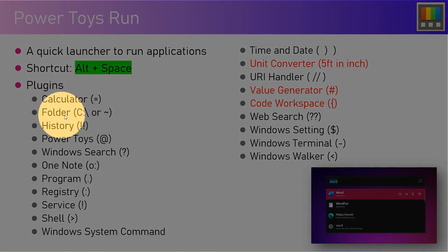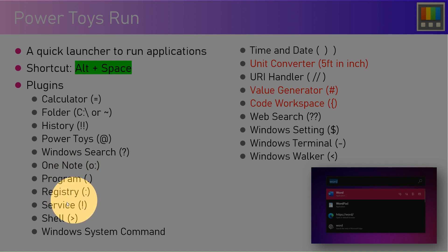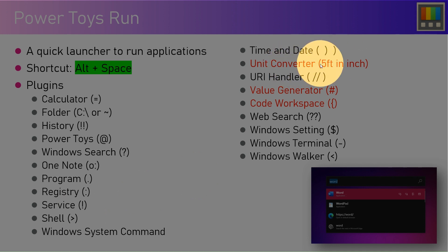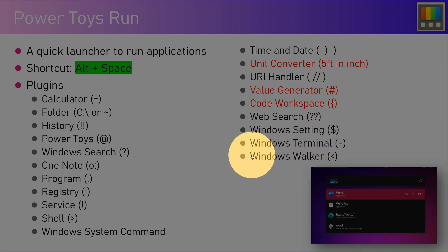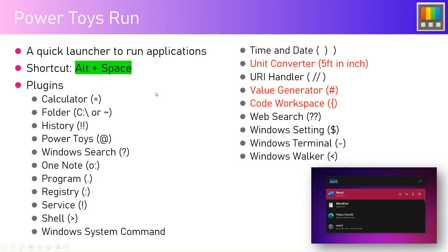Similarly, for folders you can type C colon slash and it will navigate to your folder. You can see history, open the PowerToys application, do a Windows search, search within OneNote, open a program, open the registry, open service applications, execute shell commands, see the date and time, convert units, view the URI handler, do value generation, open code workspace, web search, Windows settings, Windows Terminal, Windows Walker, and so on. Remember the shortcut Alt+Space.